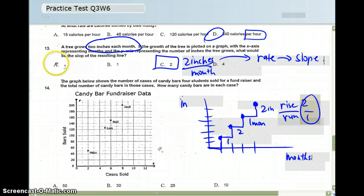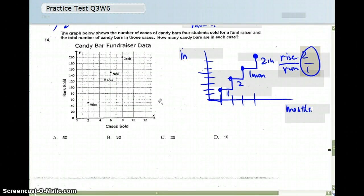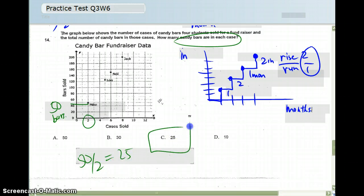And please ignore A. I think maybe there should have been a 2 down here, but I don't know what really happened with the printing. Number 14, we're looking at Mike. He sold 2 cases, and it seemed like he sold 50 bars. So if we're looking for how many candy bars are in just one case, then we would simply divide 50 divided by 2 and get 25, answer C.